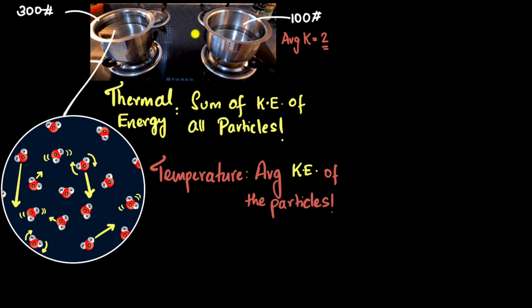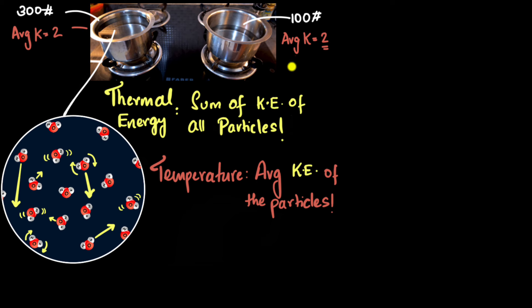Both vessels are at room temperature — I haven't started heating them yet. That means they should have the same temperature, which means the same average kinetic energy of 2 units. So what is the thermal energy in the smaller vessel? Each molecule has on average 2 units of energy, and there are 100 molecules total, so the total energy is 200 units. That represents the thermal energy of the smaller vessel.